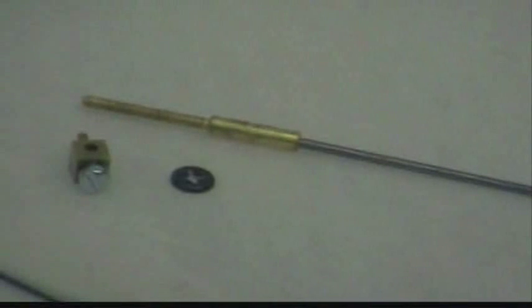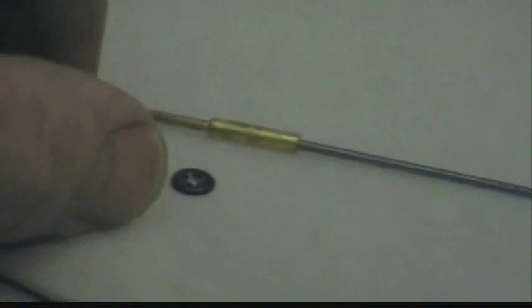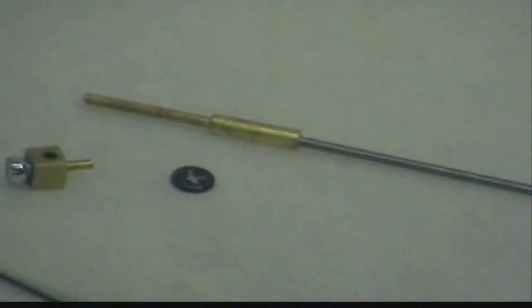To the rudder horn, these are the pieces we are going to use. The square thing with a screw in there allows the linkage to be adjusted. The rod goes through the square thing. The little black thing is a keeper. After you put the pin through the control arm, you put the keeper on it so it stays in the control arm.